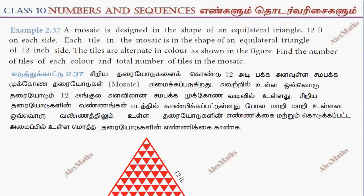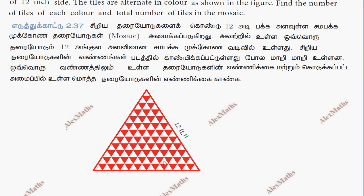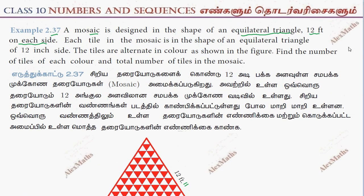Hi students, this is Alex here. Example 2.37: A mosaic is designed in the shape of an equilateral triangle, 12 feet on each side. In the diagram, the equilateral triangle is 12 feet. Each tile in the mosaic is in the shape of an equilateral triangle.